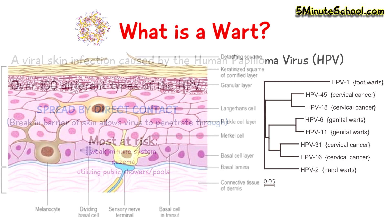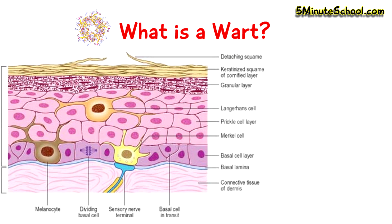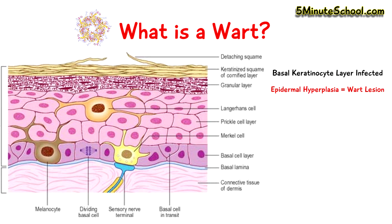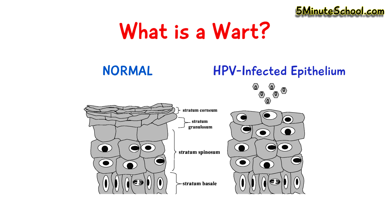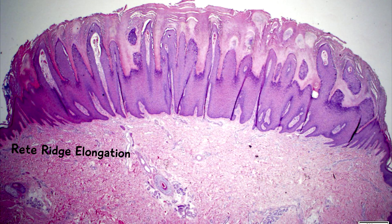When we look specifically at what happens to the cells of the body infected by the human papilloma virus, we can see that this layer of the skin called the basal keratinocyte layer becomes infected, and then we have epidermal hyperplasia, or overgrowth, which is seen clinically as a warty lesion. Microscopically, we can see thickening of the stratum corneum, stratum spinosum, and stratum granulosum layers, as well as elongation of the rete ridges.